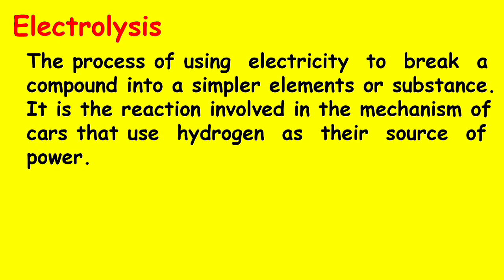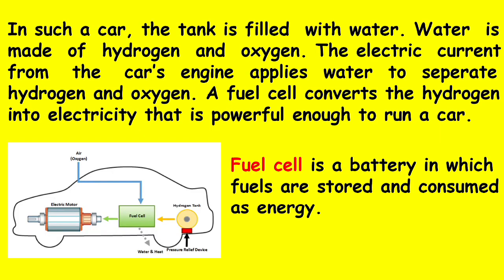Next is electrolysis — the process of using electricity to break a compound into simpler elements or substances. It is the reaction involved in the mechanism of cars that use hydrogen as their source of power. In such a car, the tanks fill with water. Water is made of hydrogen and oxygen. The electric current from the car's engine causes water to separate into hydrogen and oxygen. A fuel cell converts the hydrogen into electricity powerful enough to run a car. A fuel cell is a battery in which fuels are stored and consumed as energy.